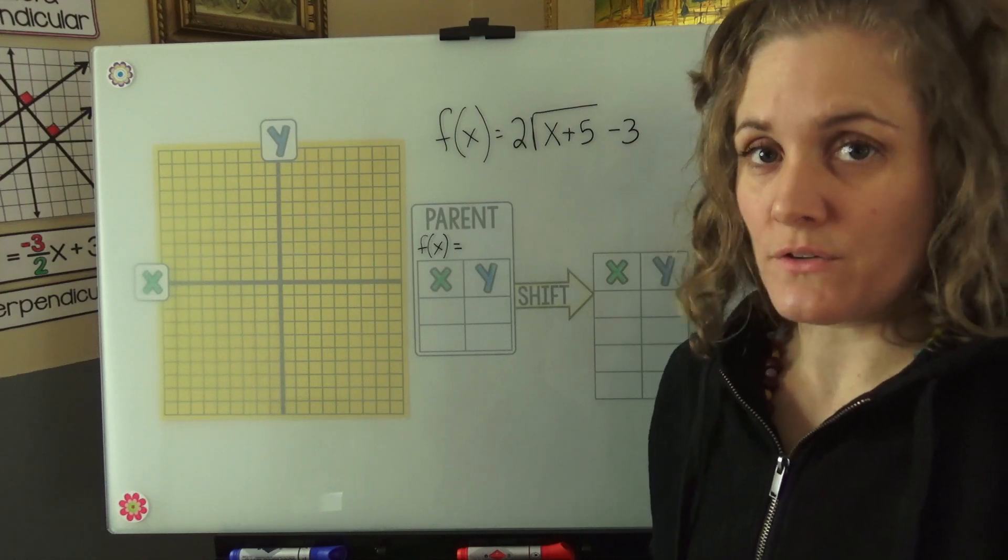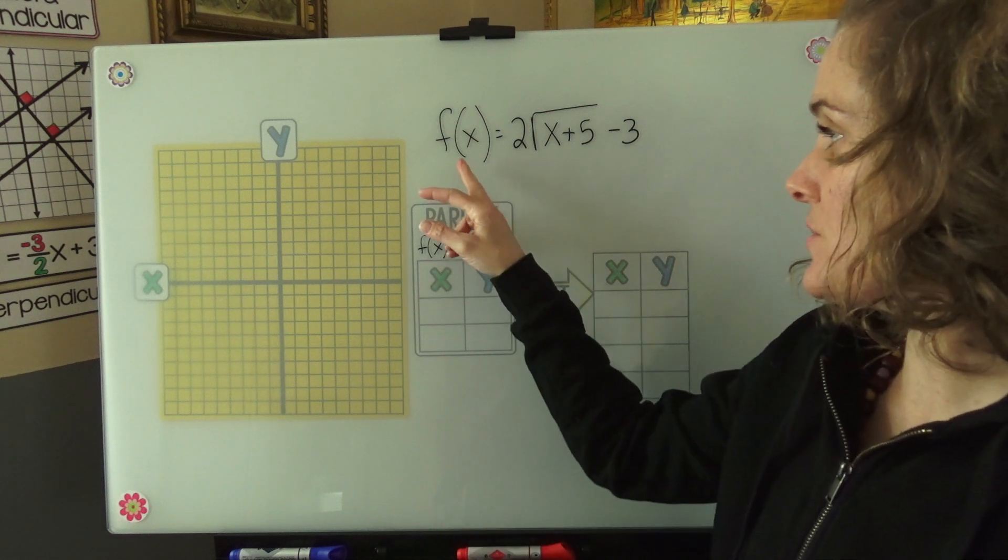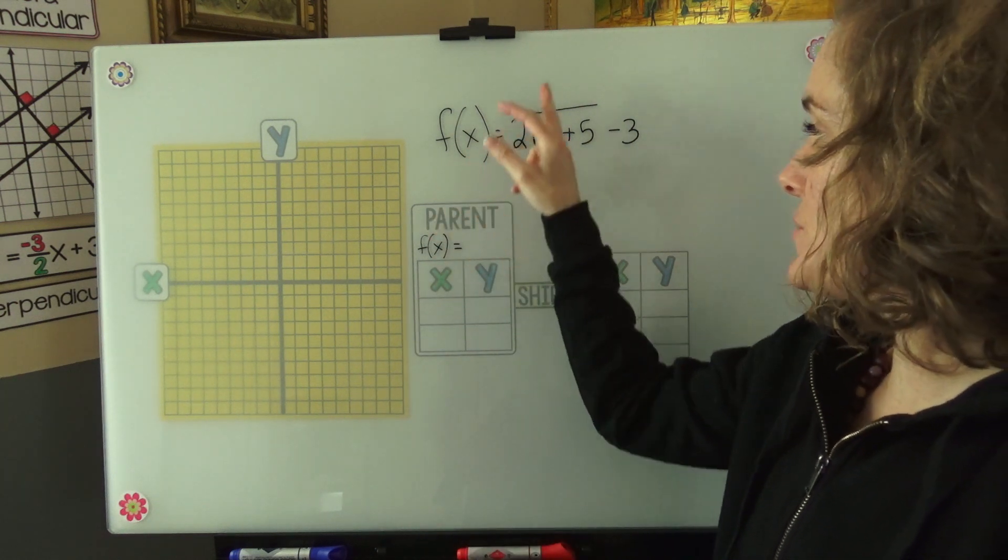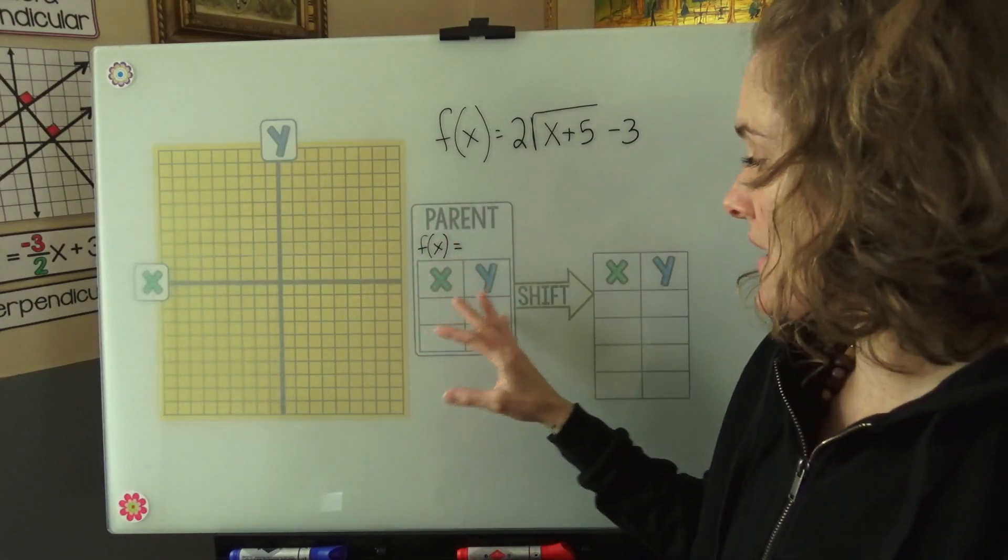Hi. Today we're graphing radical functions. I chose this function f of x equals 2 root x plus 5 minus 3, and I set up a graph and a couple tables.